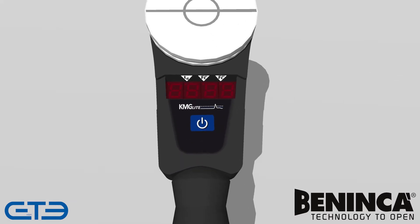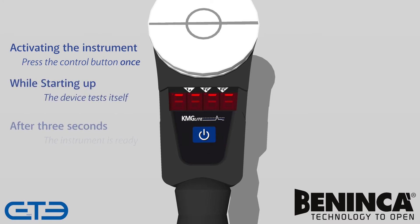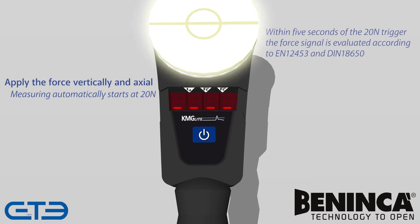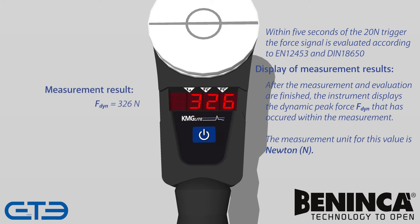Activating the instrument: press the control button once. While starting up, the device tests itself. After three seconds, the device is ready. When ready, apply the force vertically and axially — measuring will automatically begin at 20 N. Within five seconds of the 20 N trigger, the force signal is evaluated according to EN 12453 and DIN 18650. After measurement and evaluation are finished, the instrument automatically displays the dynamic peak force. The measurement unit is in N; here we have a dynamic peak force of 326 N.